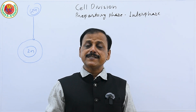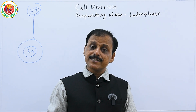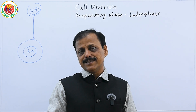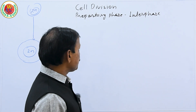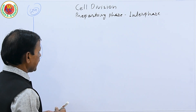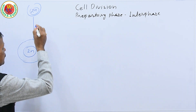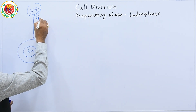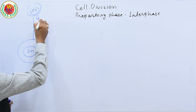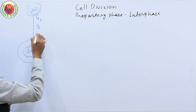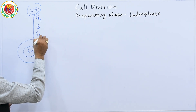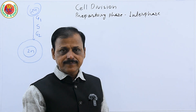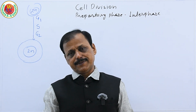The preparatory phase is the preparation of a cell to get ready to undergo cell division. A cell about to divide must go through three sub-phases: G1 phase, synthesis phase (S phase), and G2 phase. All together, these constitute the interphase or preparatory phase.